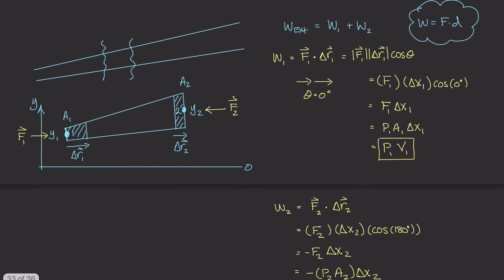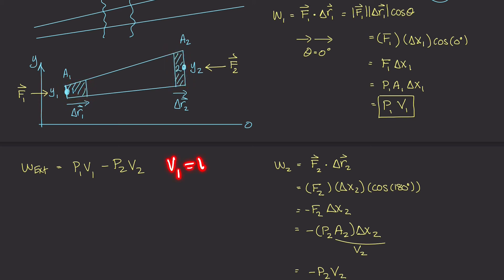The total external work is W1 plus W2, which is P1 times V1 minus P2 times V2. Since this is an ideal fluid, V1 equals V2, so we can rewrite this as pressure one minus pressure two, all times volume: W_ext = (P1 - P2) × V.